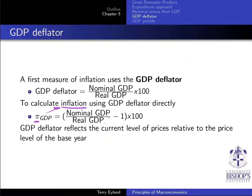The only thing that you might confuse is nominal versus real. Nominal will always be bigger than real if there is inflation, so it has to be on top — because if the bigger one's on the bottom, this number will be smaller than one, and minus one will give you a negative inflation. So make sure you put the bigger one on top. The bigger one should be there if prices have gone up.